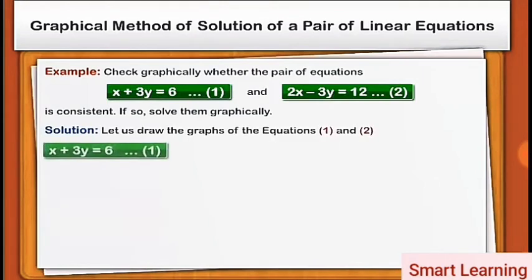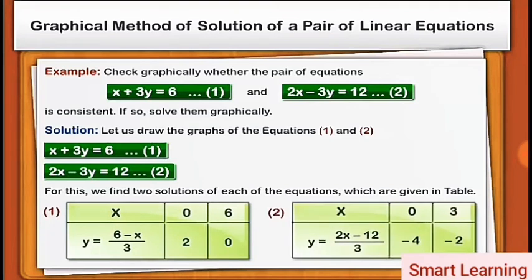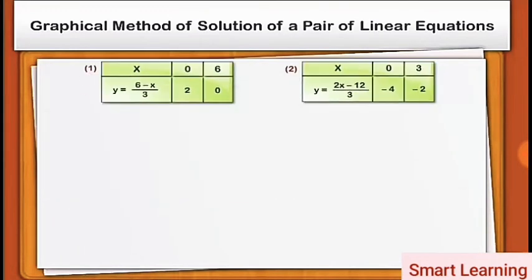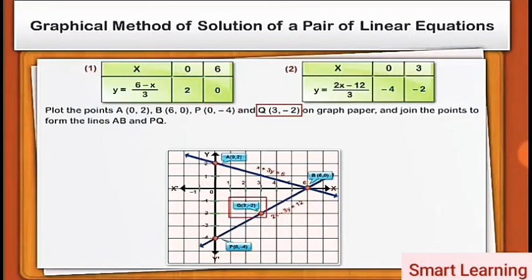Let us draw the graphs of equations 1 and 2. For this, we find two solutions of each of the equations, which are given in a table. Plot the points A(0, 2), B(6, 0), P(0, −4), and Q(3, −2) on graph paper and join the points to form the lines AB and PQ.